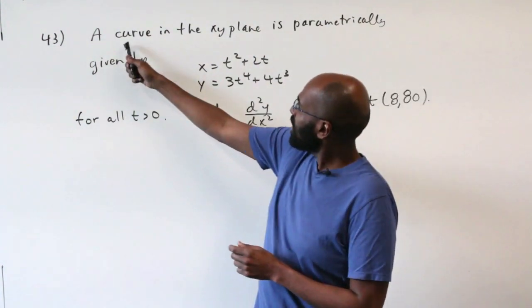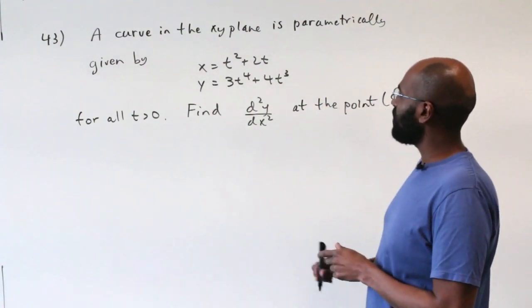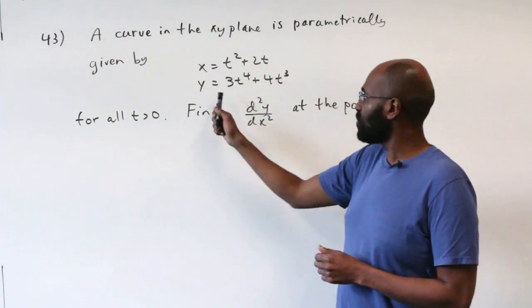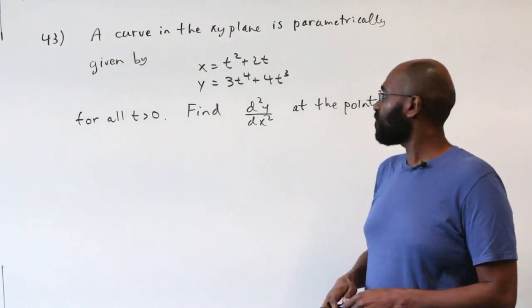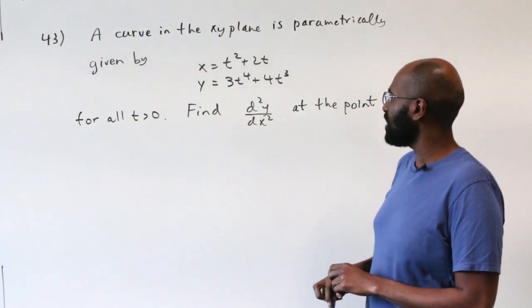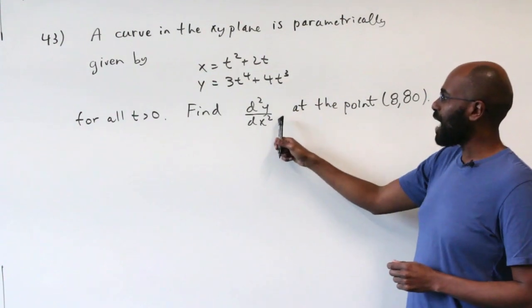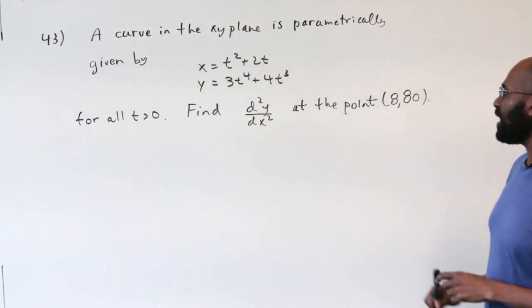So the question is, you have a curve in the xy-plane that's parametrically given by x = t² + 2t, and y = 3t⁴ + 4t³ for all t > 0. Find the second derivative of y with respect to x at the point (8, 80).